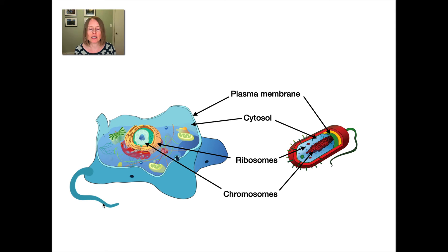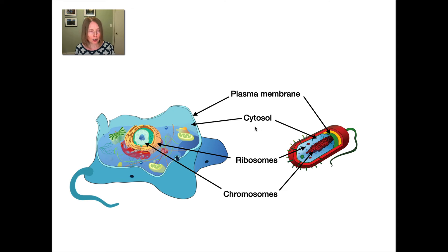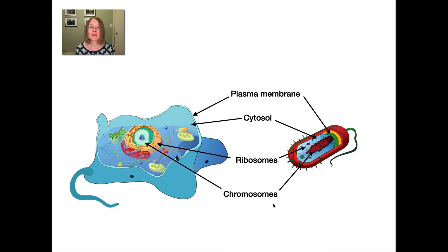Here is a diagram of the eukaryotic versus prokaryotic cell pointing out those structures that they share in common. Both eukaryotic and prokaryotic cells are surrounded by a plasma membrane, have this internal gel-like fluid called the cytosol, have ribosomes that build their proteins, and have chromosomes that carry the instructions to make those proteins.